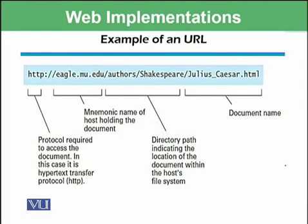Each URL has all the information needed to access the document. For example, consider a URL like: HTTP, eagle.mu.edu, author, Shakespeare's, julius-caesar.html. There are four parts in this example. The first is HTTP, which is the protocol required to access the document — in this case, Hypertext Transfer Protocol.